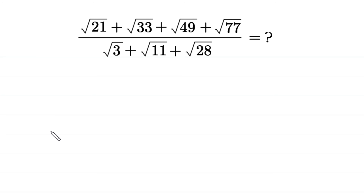Hello, welcome to how to solve this very nice square root math simplification problem. We have: square root of 21 plus square root of 33 plus square root of 49 plus square root of 77, all divided by square root of 3 plus square root of 11 plus square root of 28.